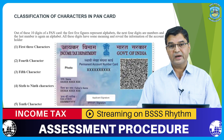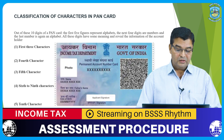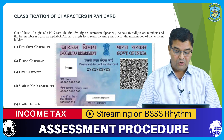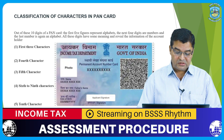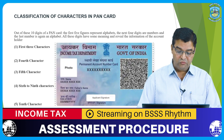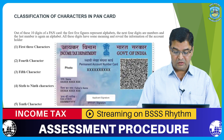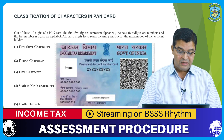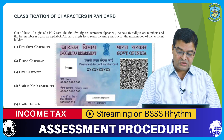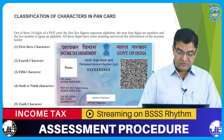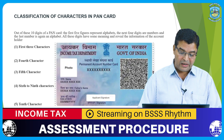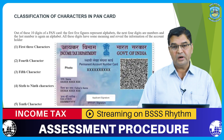Third: the fifth character. The fifth character represents the first alphabet of the PAN holder's last name or surname. For example, a person named Amit Goyal will have G as the fifth character on his PAN card because the first alphabet of his last name is G. Also, if your surname changes after marriage or due to any other reason, your PAN card number will remain unchanged.